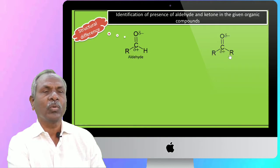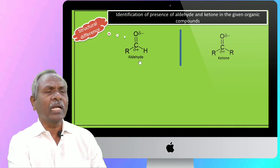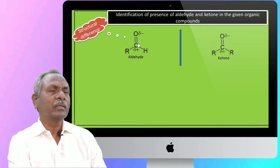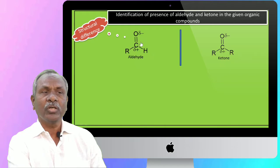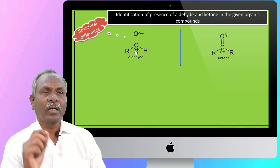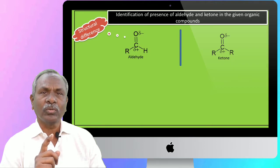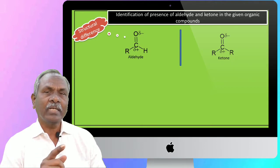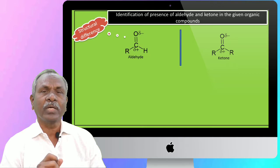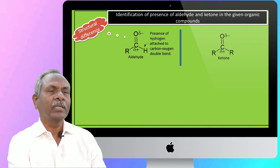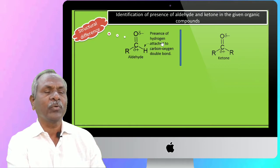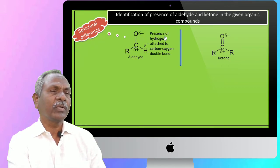Ketones are represented as R-C double bond O-R. Now in aldehydes, there is one hydrogen which is attached to the carbon-oxygen double bond. In short, we can say that in aldehydes, the carbonyl carbon is attached to one hydrogen atom, and the second valency is satisfied by either hydrogen or any hydrocarbon part. This plays a very important role in the oxidation of aldehydes.